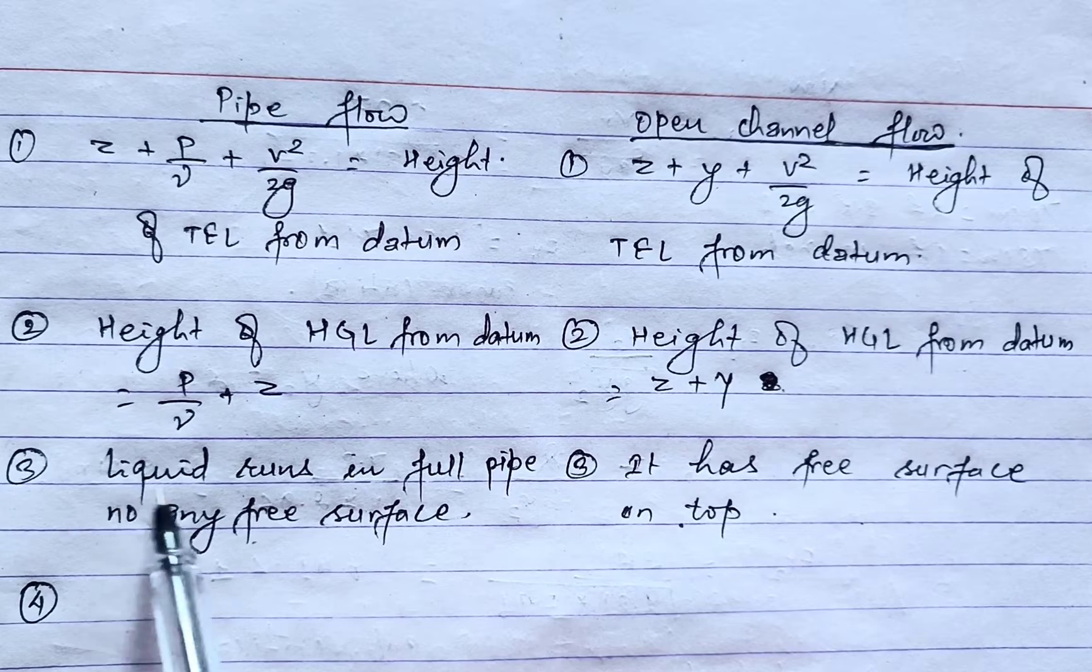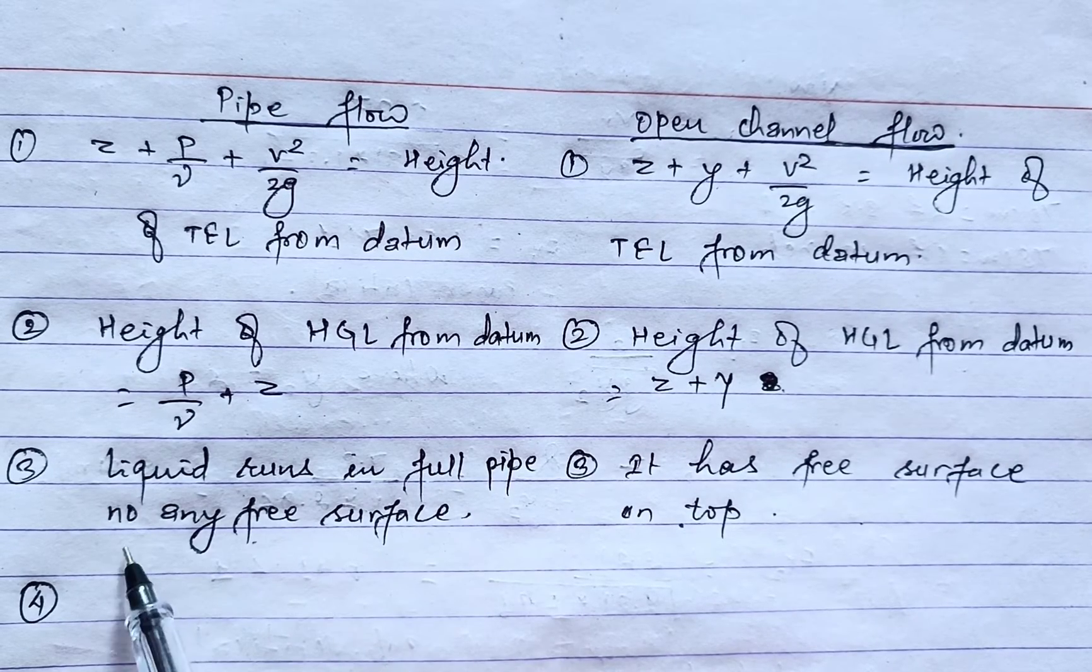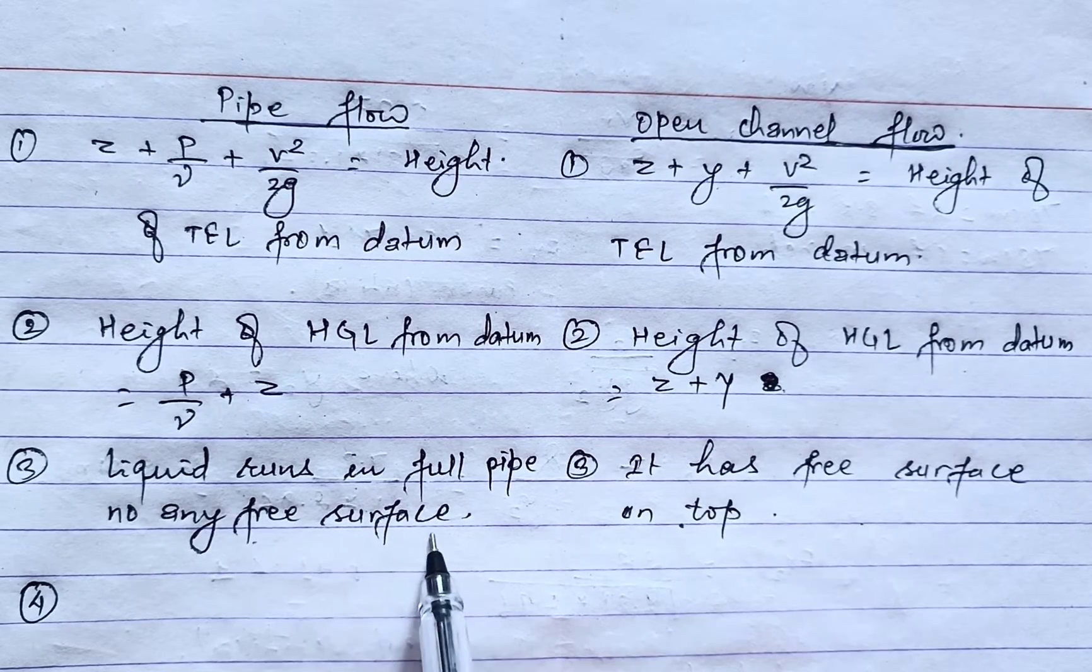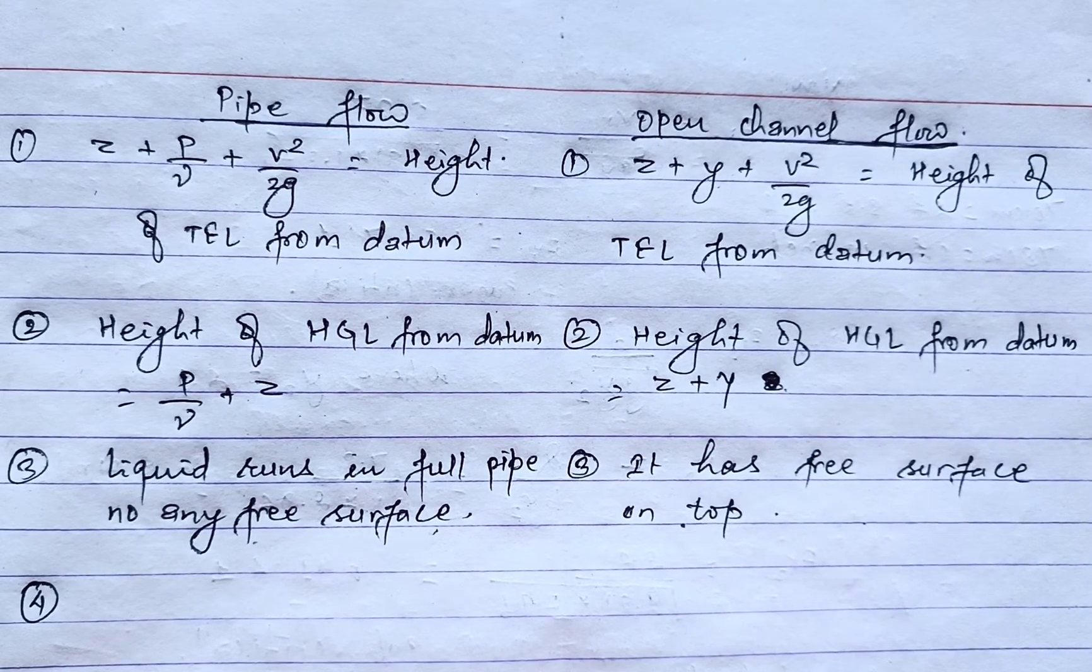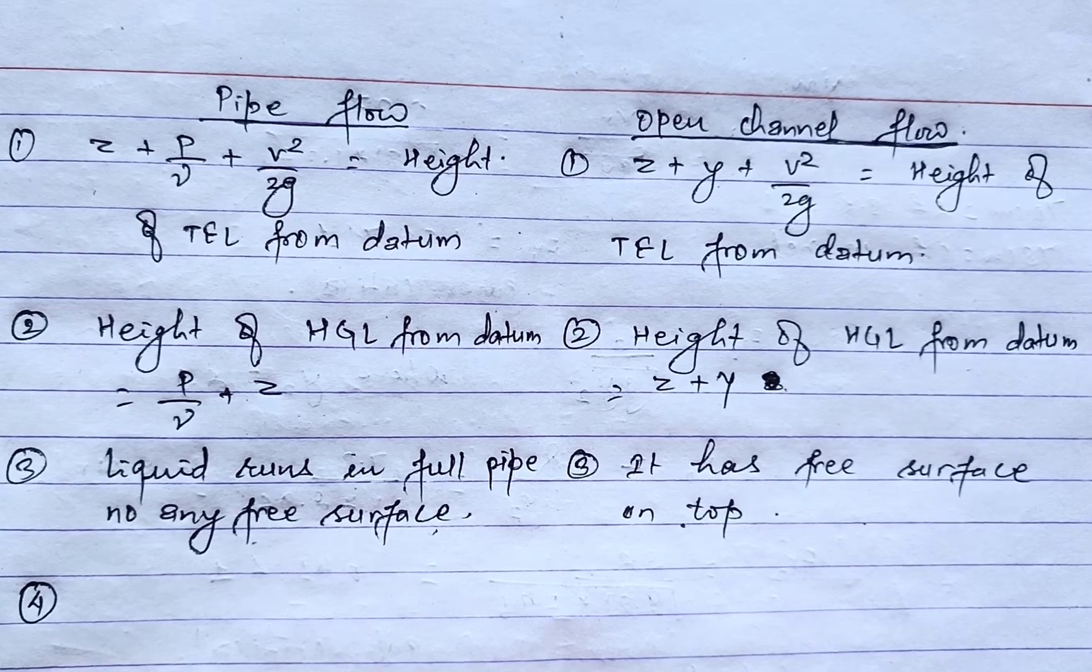In pipe flow, liquid runs in full pipe, there is no free surface inside pipe, whereas in open channel flow it has free surface on top. In pipe flow, the flow takes place under pressure.